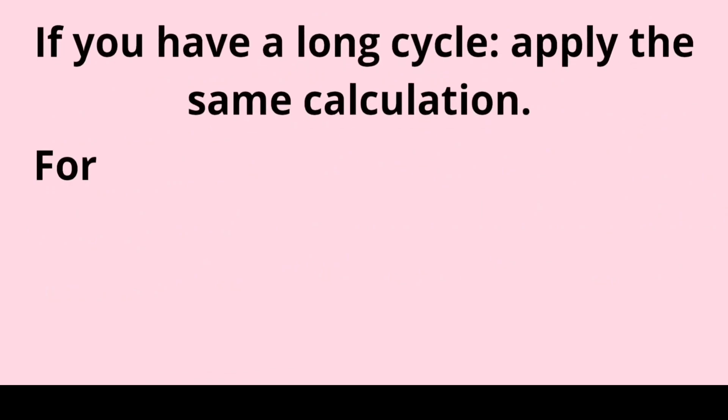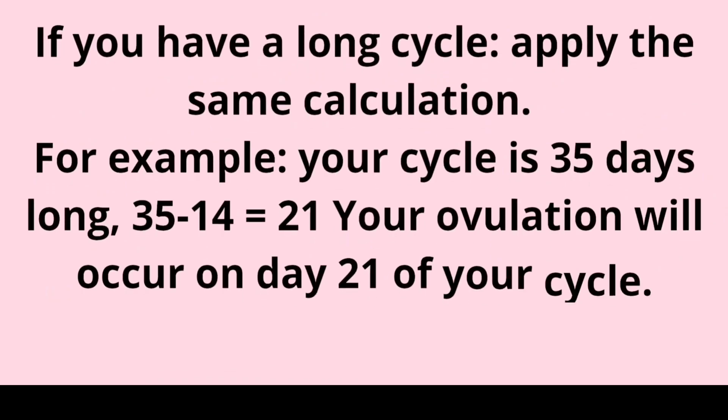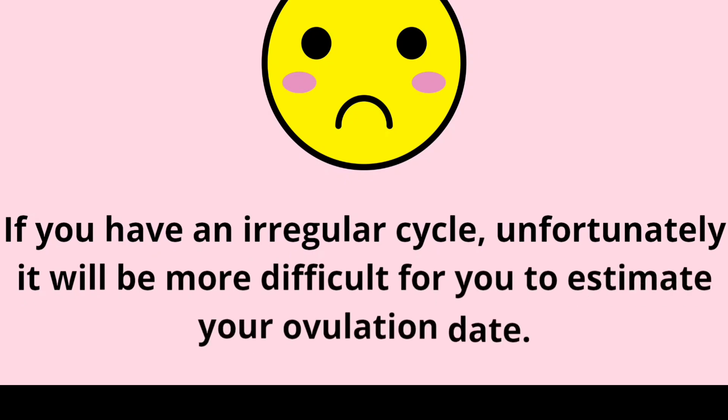If you have a long cycle, apply the same calculation. For example, if your cycle is 35 days long, 35 minus 14 equals 21 — your ovulation will be on day 21 of your cycle. If you have an irregular cycle, unfortunately it will be more difficult for you to estimate your ovulation date.